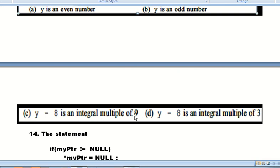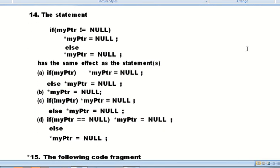Question number fourteen: If myptr is not equal to null, if myptr is equal to null - the conditions if myptr is equal to abcd have the same effect. All of these A, B, C, D are the correct options.